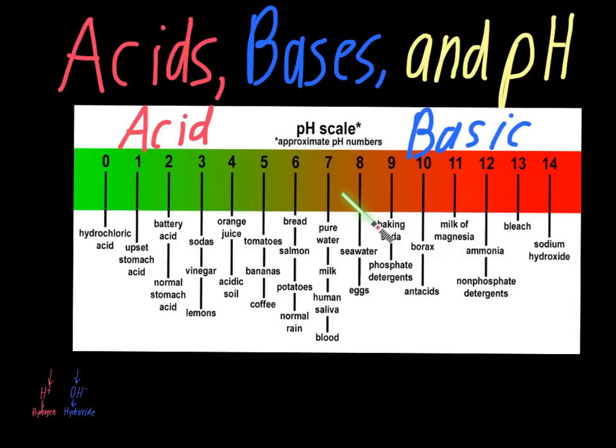But to give you an idea of some weak acids, the weak acids are actually the numbers that are closer to 7, closer to neutral. So, for example, 0, hydrochloric acid, HCl, that is extremely potent. That's going to be a very, very strong acid. Whereas something like salmon or potatoes or even normal rain, rain is slightly acidic. That's where you get that acid rain idea that you probably talked about last year in environmental science. All of those things would be a weak acid.